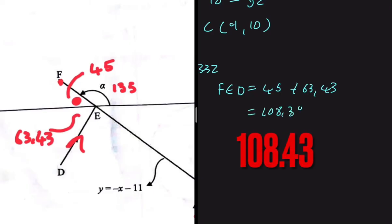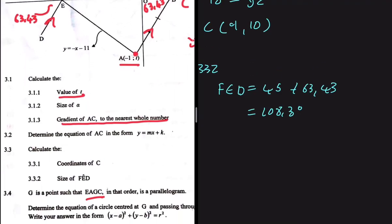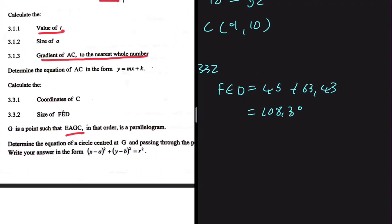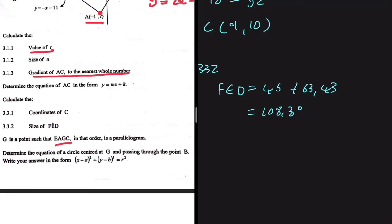Therefore, angle FED equals 45 plus 63.43, giving 108.43 degrees. That is angle FED. For the last question: G is a point such that EAGC in that order forms a parallelogram. Determine the equation of a circle with center G passing through point B, giving your answer in the form (x minus a) squared plus (y minus b) squared equals r squared.